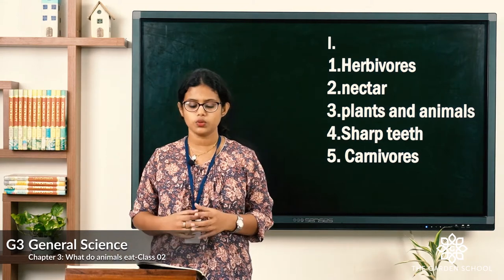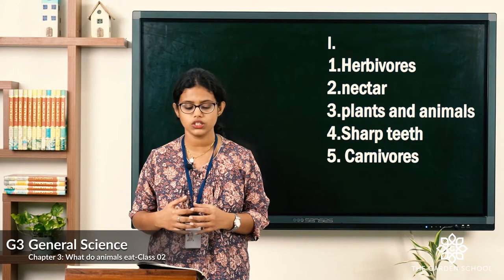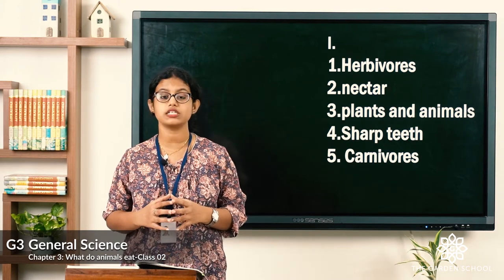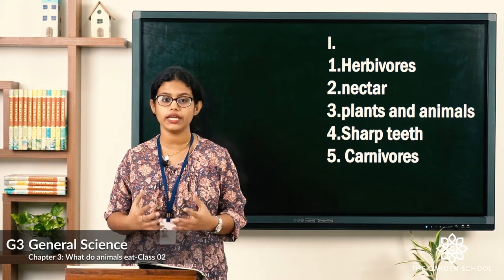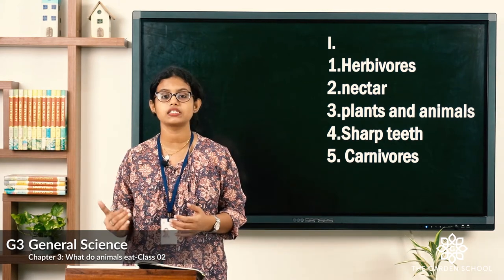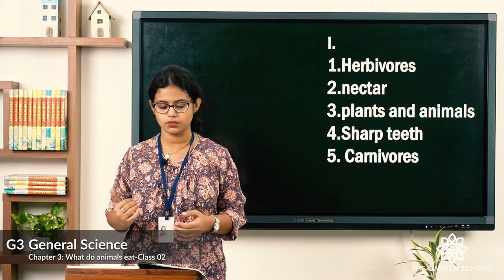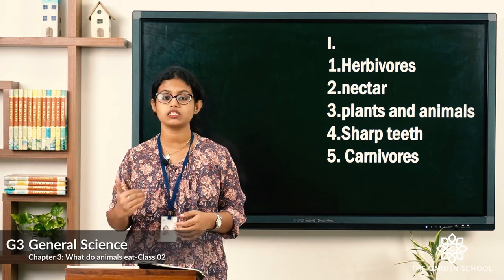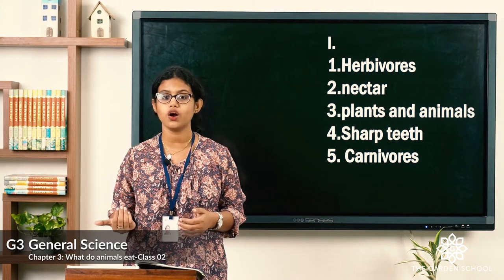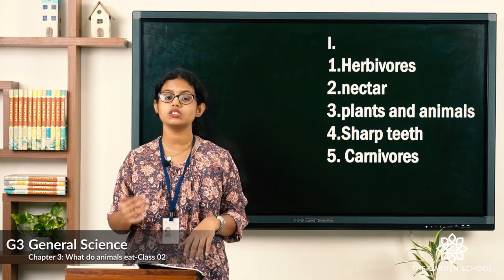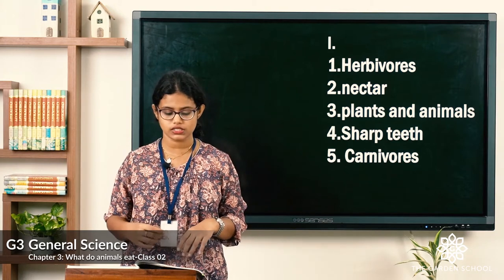Third one: peacocks and foxes eat both plants and animals. Animals which eat both plants and animals — what do we call them? We call them omnivorous animals.